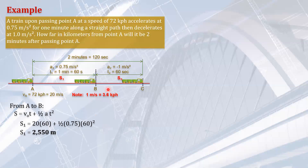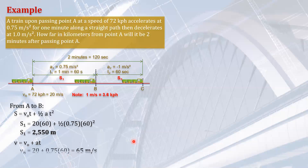Before going to the second part of the motion, the train will have gained speed upon reaching point B, and that speed will now be the initial velocity for the motion from B to C. So we need to solve the velocity at B using: final velocity equals initial velocity plus acceleration times time. The initial is 20, the acceleration is 0.75, and the time is 60, giving the velocity of the train at B — which serves as the initial velocity from B to C.